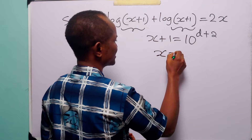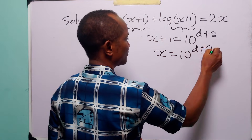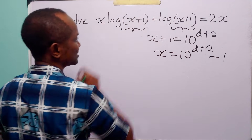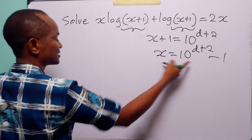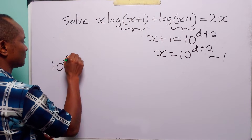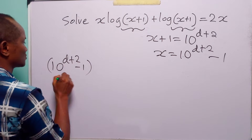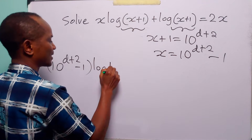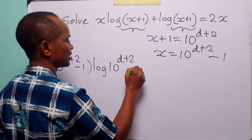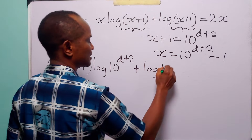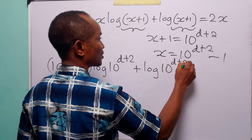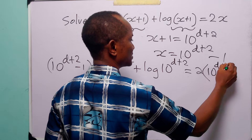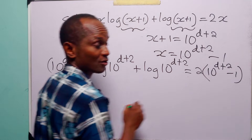From this substitution, we have that x is equal to 10 to the power d plus 2 minus 1. When we rewrite the original equation, we have x — that is 10 to the power d plus 2 minus 1 — times log of 10 to the power d plus 2, plus log of 10 to the power d plus 2, and this is equal to 2 times x, which is 10 to the power d plus 2 minus 1.